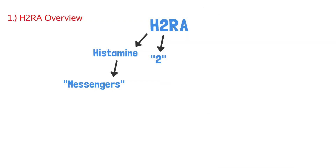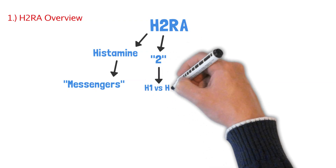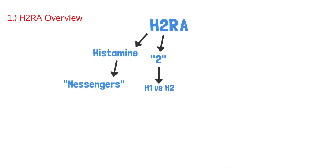The 2 refers to the type of receptor — in this case, the histamine 2 receptor. There are H1 and H2 receptors; we're focusing on H2. H2 has to do with gastric acid, and this H2 receptor acts as a messenger to either stimulate or block gastric acid. H1, which we won't focus on, has more to do with allergic reactions.